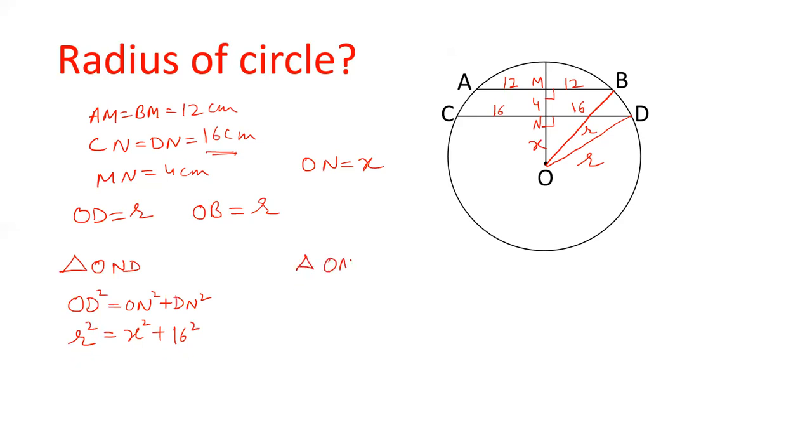Now let us take triangle OMB which is also a right angle triangle and OB square will be equal to OM square plus BM square. We have OB as R square. OM is X plus 4, OM plus MN is X plus 4 and BM is equal to 12 square. A plus B whole square we can apply here. So X square plus 8X plus 16, 12 square is 144. Now this is also R square, this is also R square.